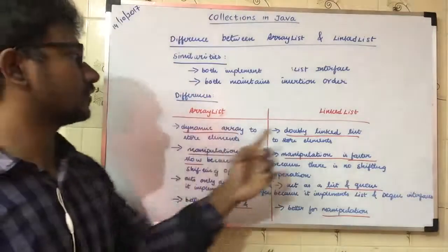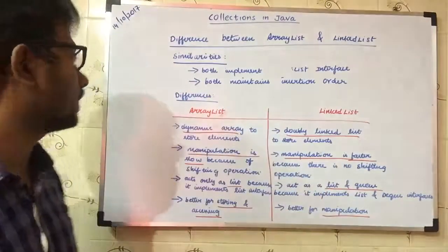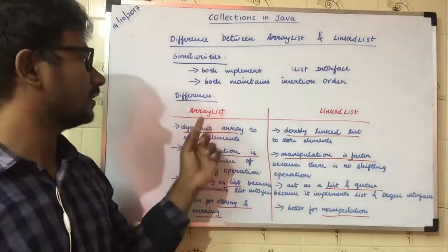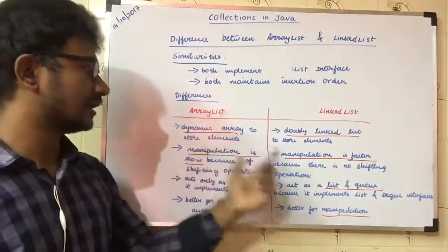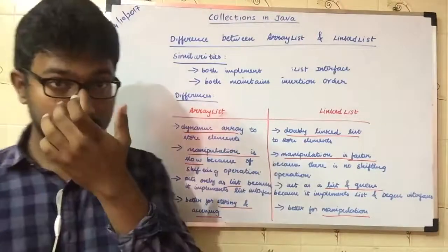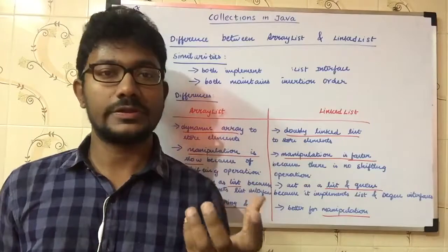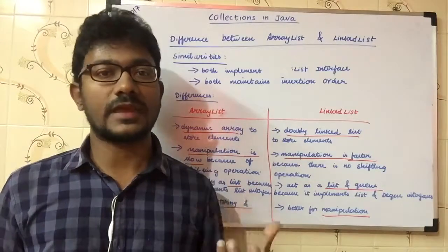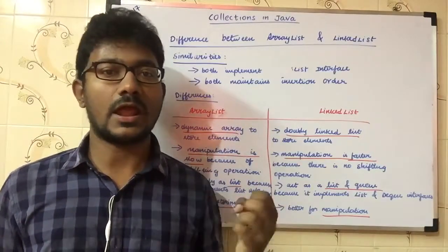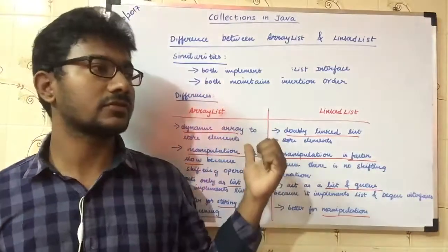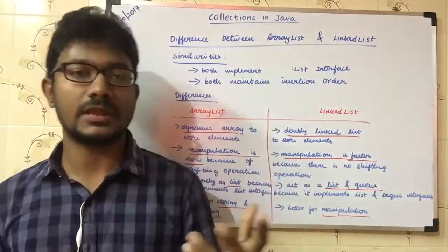Now let's focus on the differences. The first difference is that ArrayList is dynamic — we can store one particular type of data, and the ArrayList grows dynamically.